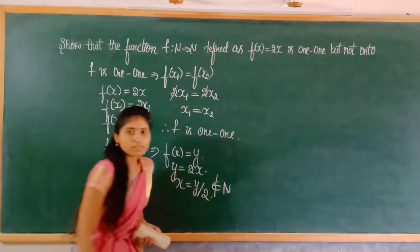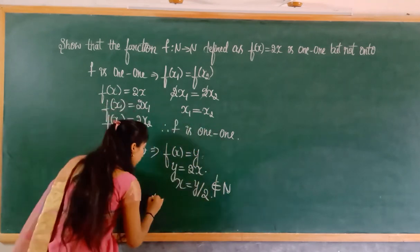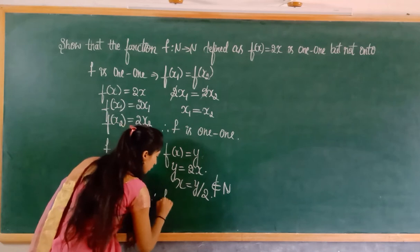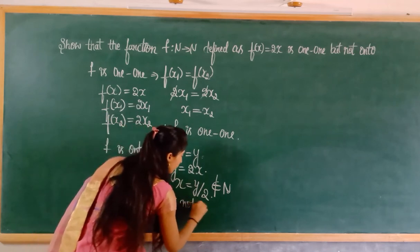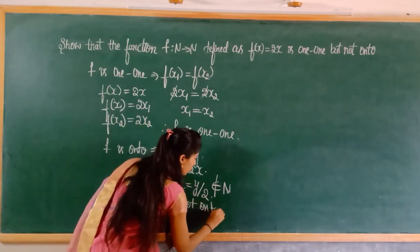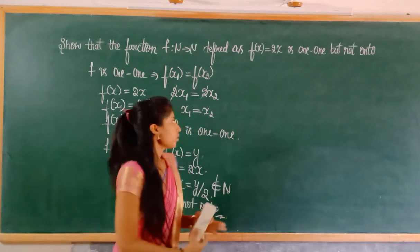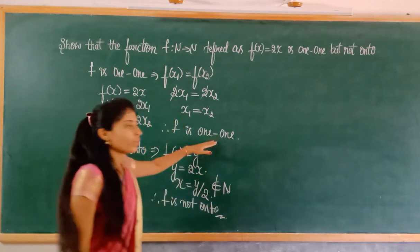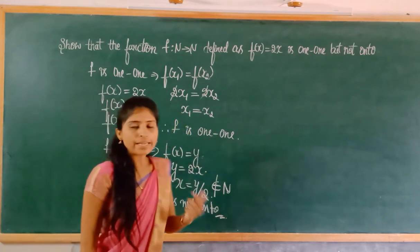Therefore, f is not onto. So f is one-to-one but not onto. Next problem.